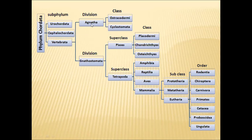Vertebrata is classified into two divisions: Agnatha and Gnathostomata. In Agnatha, we have Acanthodermi and Cyclostomata. Acanthodermi organisms are extinct, while Cyclostomes are living. They do not possess a lower jaw, so they are called jawless fishes — though they are not true fishes, they only look like fish in appearance. Gnathostomata are the true fishes, possessing jaws in their skull.